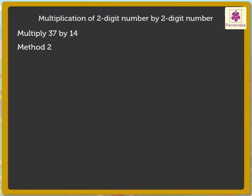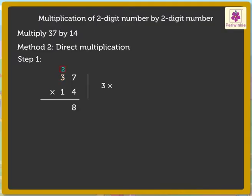Method 2: Instead of regrouping, we can directly multiply like this. Step 1: Multiply the multiplicand, that is 37, by the ones digit of the multiplier, that is 4. 7 into 4 is equal to 28. 3 into 4 is equal to 12 plus the carried over 2 is equal to 14. We will call 148 as the first partial product.